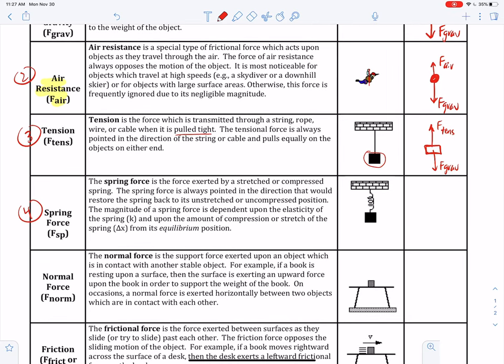Spring force is the force exerted by a stretched or compressed spring. The spring force is always pointed in the direction that would restore the spring back to its unstretched or uncompressed position. Springs always want to return to their resting state. The magnitude of a spring force is dependent upon the elasticity of the spring, which is a coefficient called k, and upon the amount of compression or stretch of the spring, delta x, from its equilibrium position.